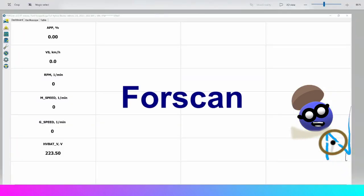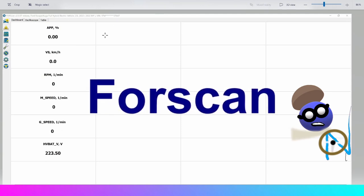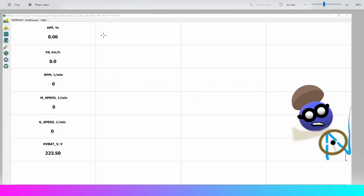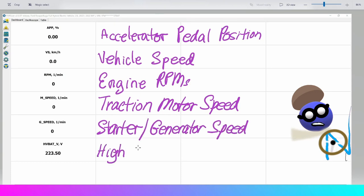I wanted to see all these interactions in real time so I used Forescan to record everything on a short road trip. Here are my Forescan settings: accelerator pedal position, vehicle speed, engine rpms, traction motor speed, starter generator speed, and high voltage battery voltage.